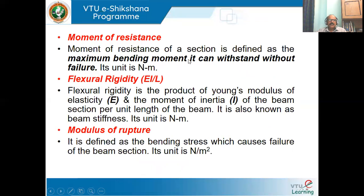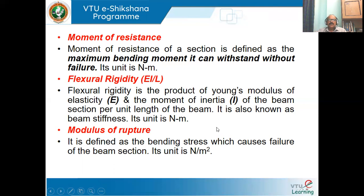Moment of resistance of a section is defined as the maximum bending moment it can withstand before failure; its unit is Newton-meter. Flexural rigidity is the product of Young's modulus and moment of inertia. Per unit length it is EI/L; generally it is the product E·I. It is also known as beam stiffness, with units of Newton·meter². Modulus of rupture is defined as the bending stress which causes failure of the beam section; its unit is N/mm².